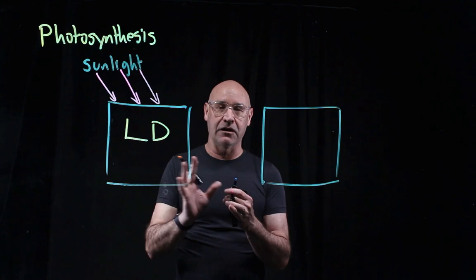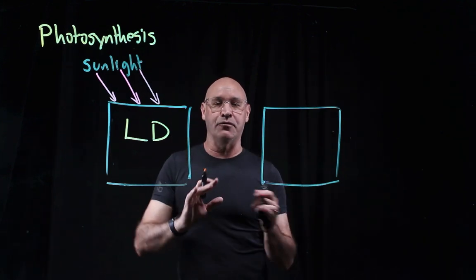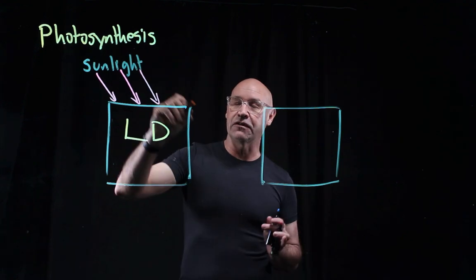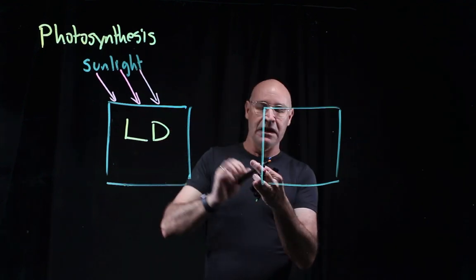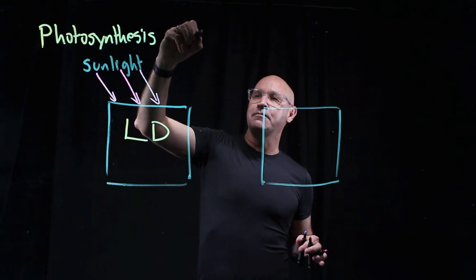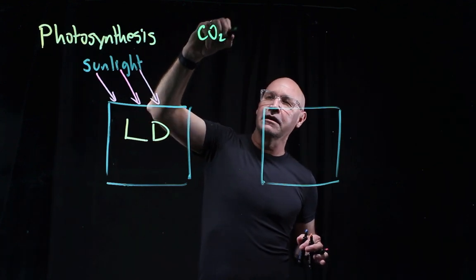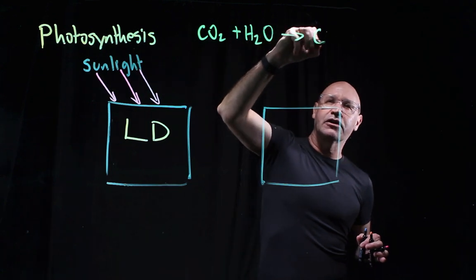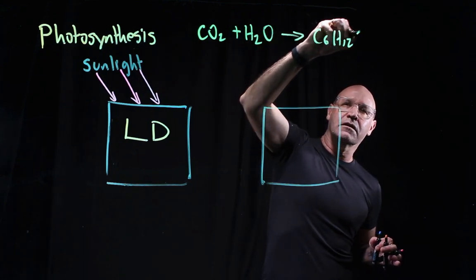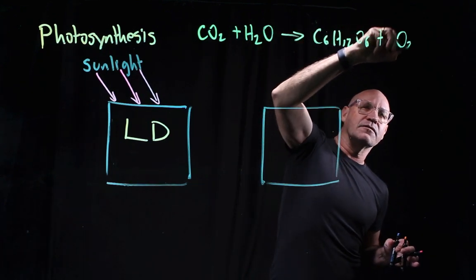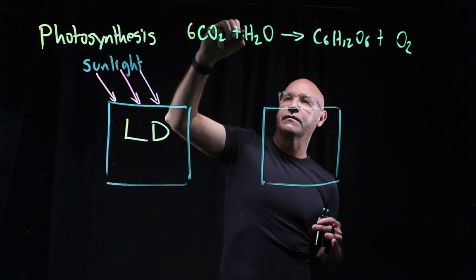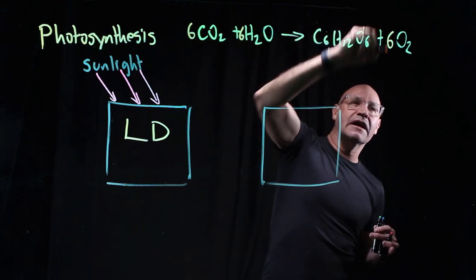Apart from sunlight, all of the other inputs and outputs we summarize in our chemical formula for photosynthesis. So we've got our inputs are carbon dioxide plus water, and the outputs are glucose and oxygen. To balance that, I just need to go six, six, and six.